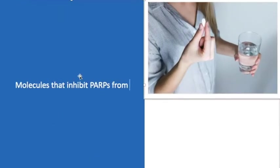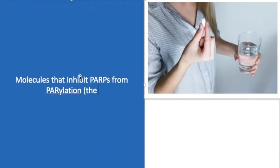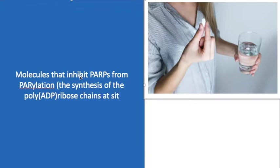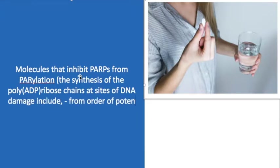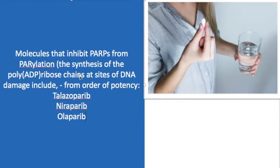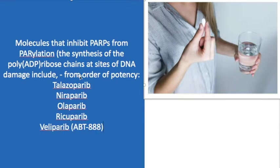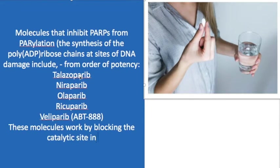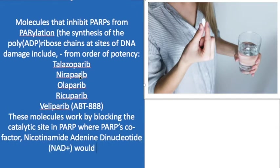Molecules that inhibit PARP — the synthesis of poly-ADP-ribose chains, a process called PARylation — at sites of DNA damage include, in order of potency: talazoparib, niraparib, olaparib, rucaparib, and veliparib, also known as ABT-888. These molecules work by blocking the catalytic site where NAD+ (nicotinamide adenine dinucleotide) would normally bind, making them competitive inhibitors of NAD+.